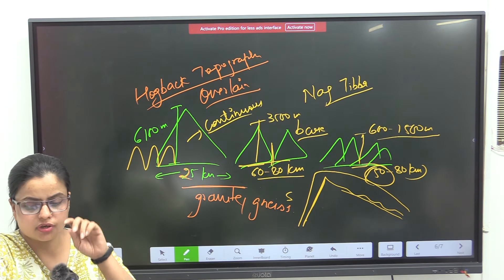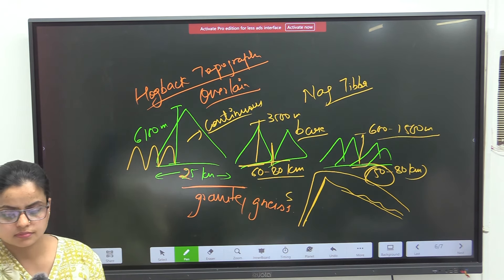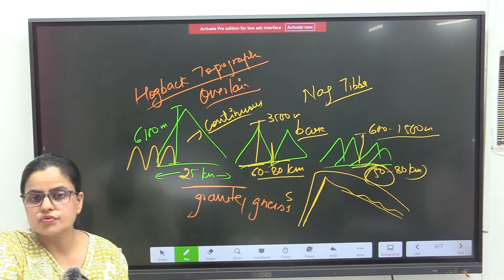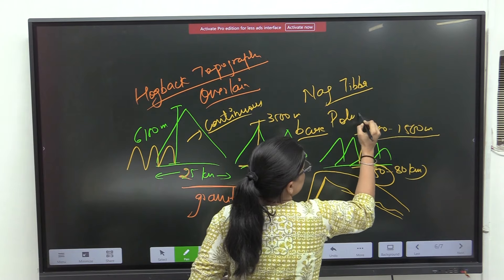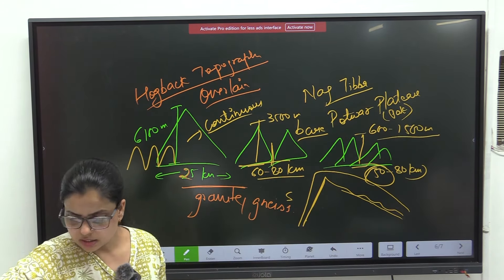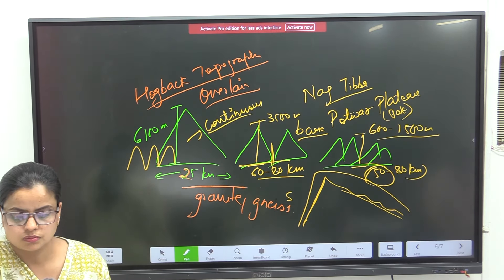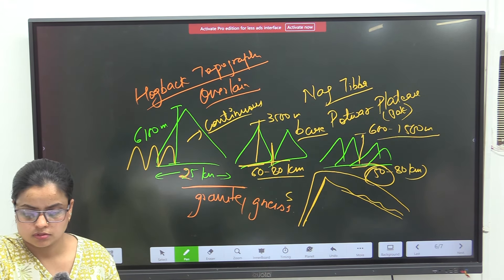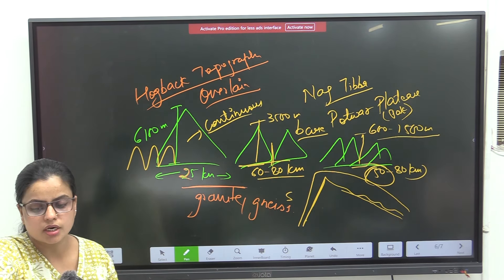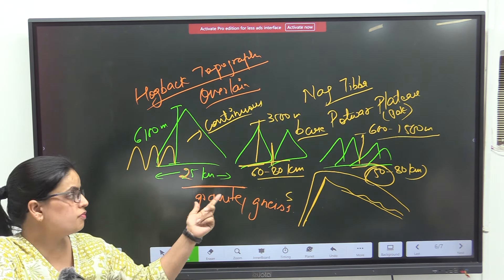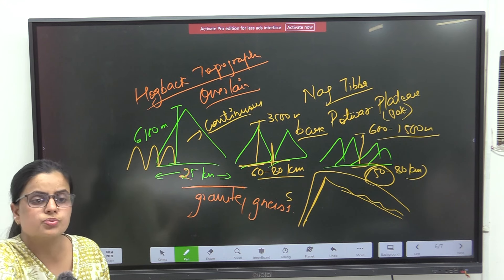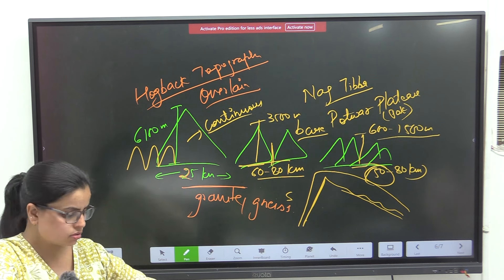The Shivaliks run for a distance of 2400 kilometers, from the Potwar Plateau — which is in Punjab, Pakistan — to the Brahmaputra Valley. The southern slopes are steep while the northern slopes are gentle.